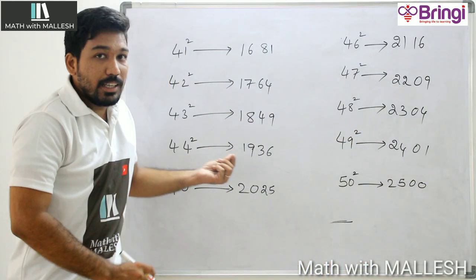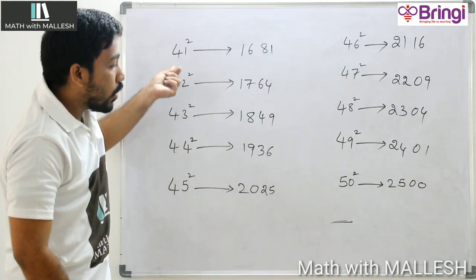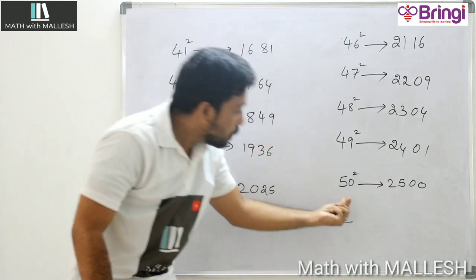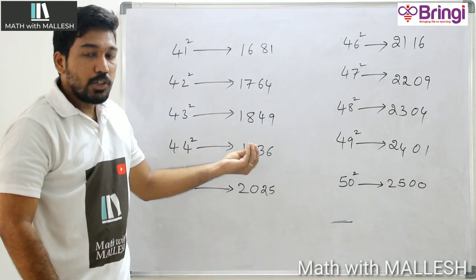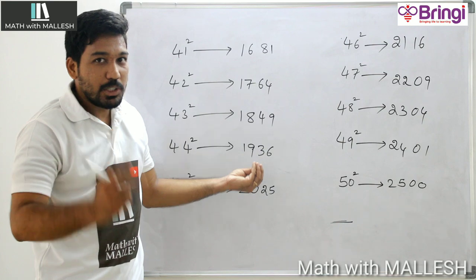Whenever you are doing calculations in competitive exams, if you got squares from 41 to 50, use this trick to solve in just 2 seconds.